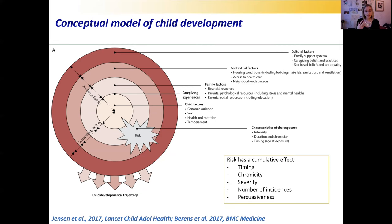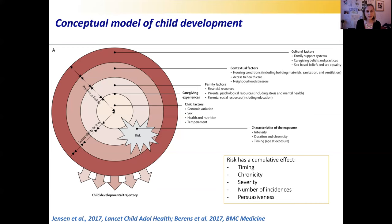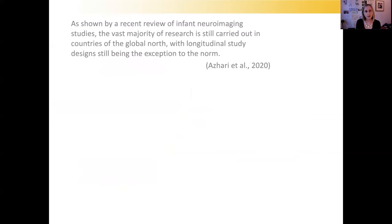Some of these factors act as protective factors and some as susceptibility factors that may indicate risk. All of this risk that you might be exposed to in childhood has a cumulative effect, and it will matter as to when these risks or protective factors are within your developmental trajectory — in terms of timing, chronicity, severity, and how many episodes there are and how long they carry on impacting.